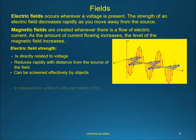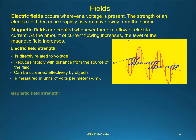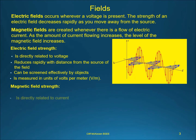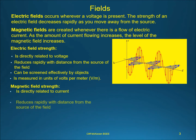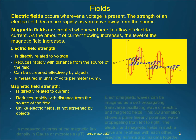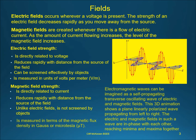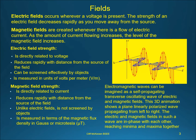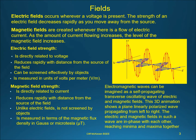Electric field strength is directly related to voltage, reduces rapidly with distance from the source of the field, can be screened effectively by objects, and is measured in units of volts per meter (V/m). Magnetic field strength is directly related to current, reduces rapidly with distance from the source of the field, but unlike electric fields, is not screened by objects, and is measured in terms of the magnetic flux density in gauss or micro-tesla.